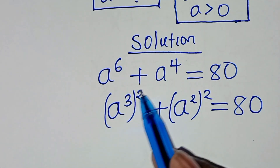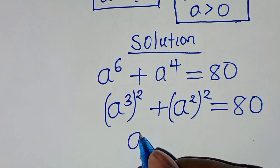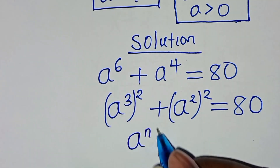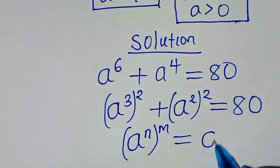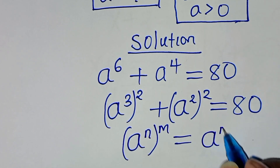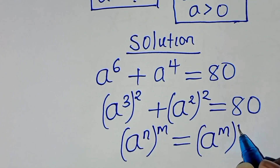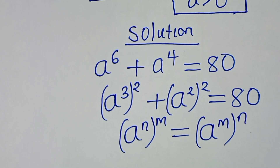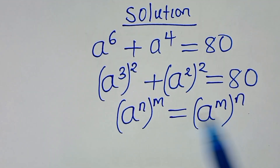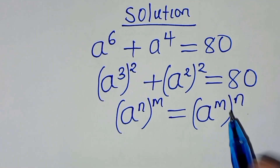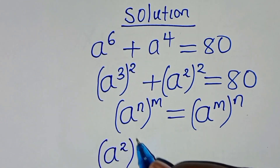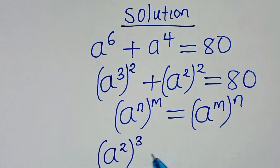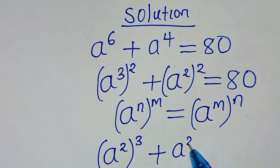From here, a to the power of 3 raised to power 2 is in the form of a to the power of n raised to power m, which we can express as a to the power of m raised to power n. Applying this exponent property, we have a to the power of 2 raised to power 3, plus a to the power of 2 raised to the power of 2.